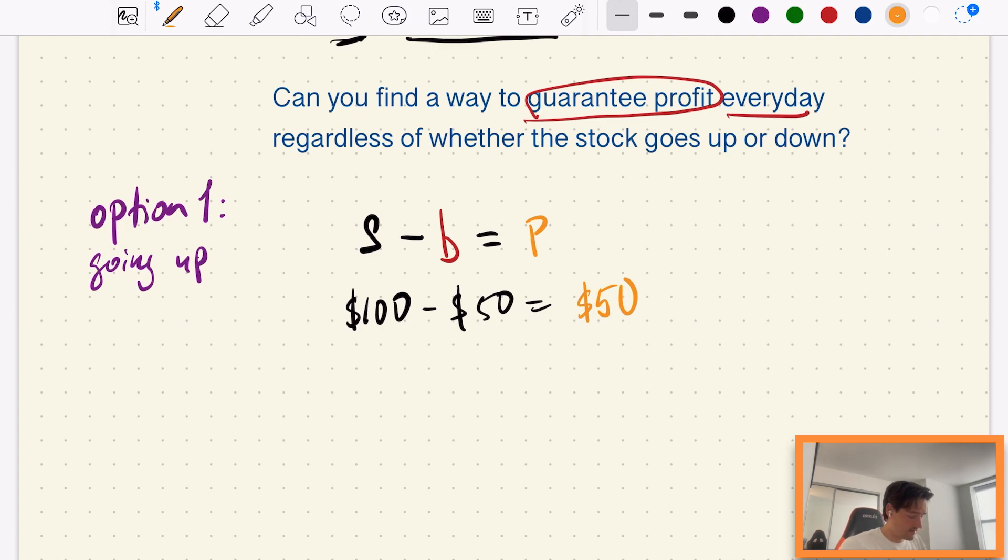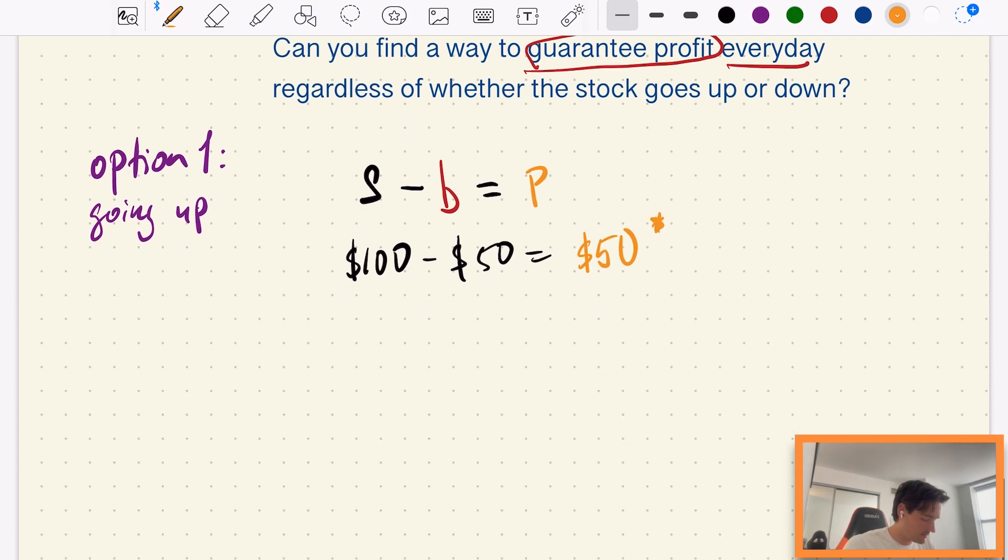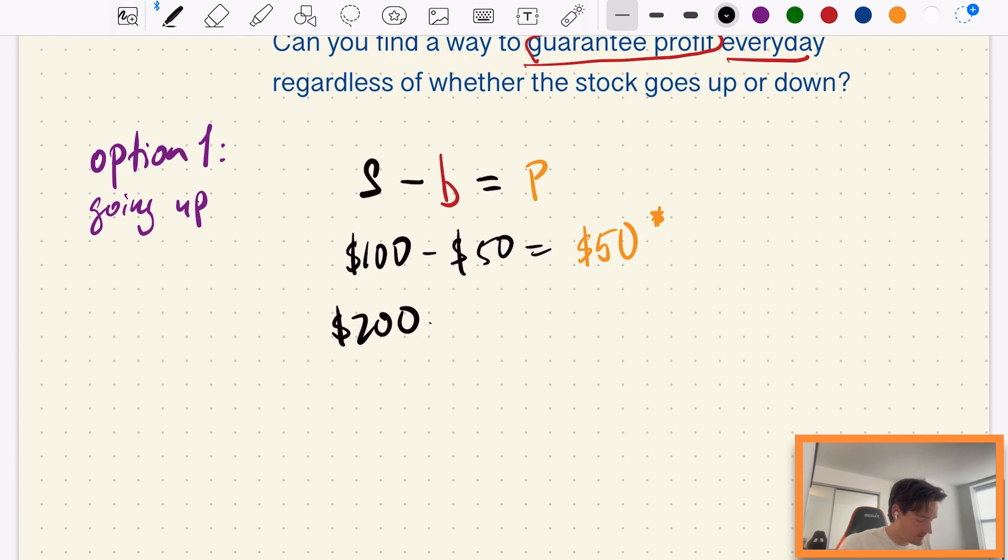Now obviously this is if nothing happens, so don't worry too much about this. So option one, the stock goes up, so our stock in fact now becomes $200. And our bet here is in fact $50, in fact minus $50, because of the fact that we lost that bet. So our overall payout is $150 in this case, which is great, we have a positive payout here.